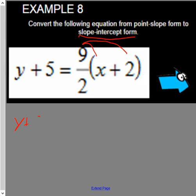Leave the y plus 5 the same. 9 over 2 times x is just 9 over 2x. 9 over 2 times 2, we can put this over 1, then these will cancel so it's just 9.